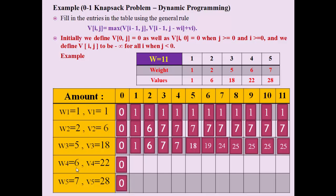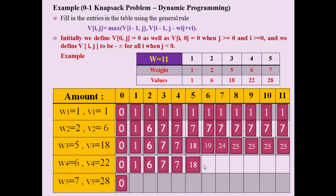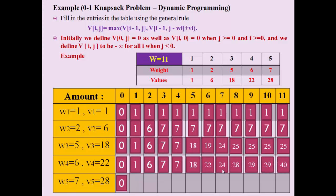For the fourth row (i=4, weight=6): columns 1 through 5 have values less than 6, so above values are copied directly (1, 6, 7, 7, 18). At column 6: V[3][0]=0, plus v4=22, gives 22; compare with above 19, maximum is 22. We fill remaining elements of row 4 similarly.